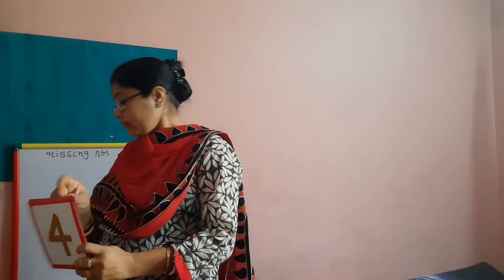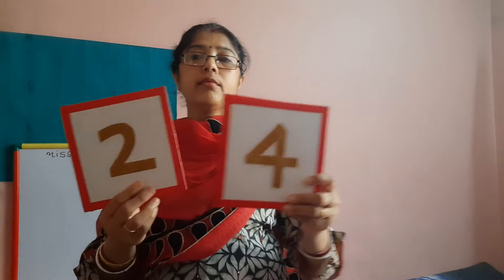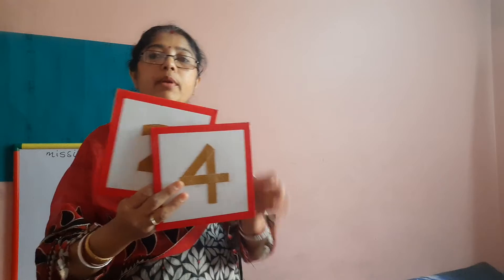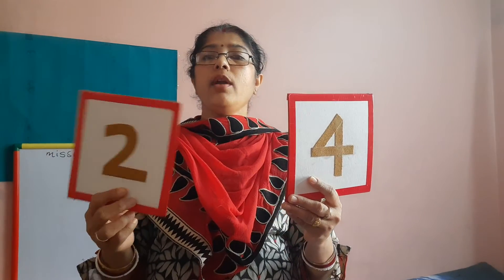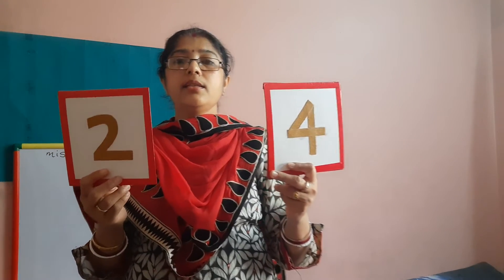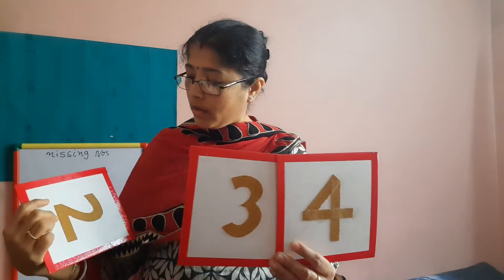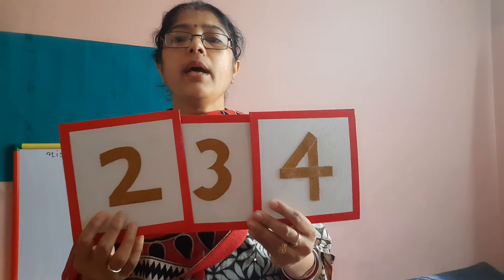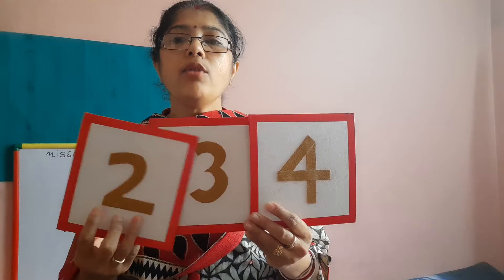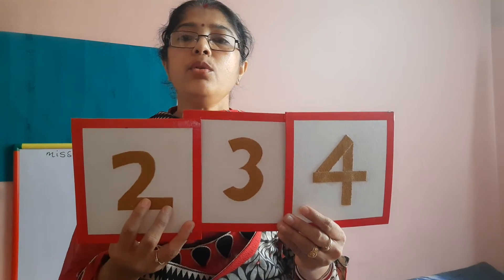4 and 2. Aray baba, 4 and 2 ke bich mein kya? Again? What is there between 4 and 2? Chalo phir se bolenge: 10, 9, 8, 7, 6, 5, 4, 3. Okay, no problem. We will write number 3. 3, 2. Ab to hume aata hai likhna. We know how to write number 3. 4, 3, 2, 1.